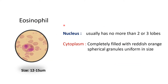The next WBC is the eosinophil, which is very easy to identify because of its orange granules. The nucleus usually has two lobes connected by a thin filament, resembling spectacles, though it can have two or three lobes. The cytoplasm is filled with reddish-orange spherical granules, uniform in size. The size of the eosinophil is 12 to 15 micrometers.